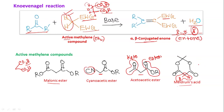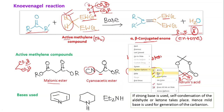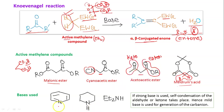For the base, mostly organic bases are used like pyridine or piperidine — piperidine is a secondary amine. If a strong base is used, there is a chance of self-condensation of the aldehyde or ketone, so to avoid that we use a mild base. Another reason is that these hydrogens are already acidic, so a very strong base is not required.